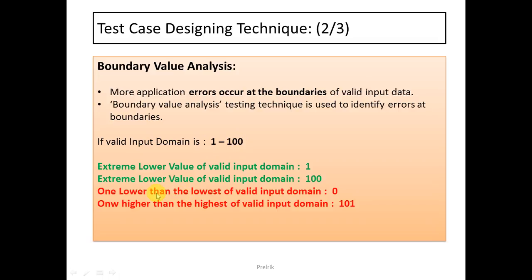To catch errors at the boundaries, you write one more test case with data one lower than the extreme lowest valid value — so valid lowest is 1, you write 0 — that is your third test case. The fourth test case is one higher than the highest valid value, which is 100, so you use 101. That is how you design test cases using Boundary Value Analysis.